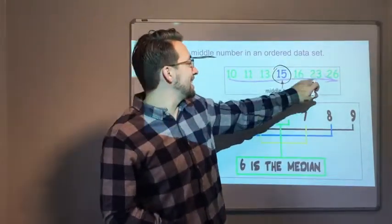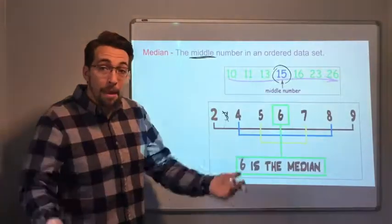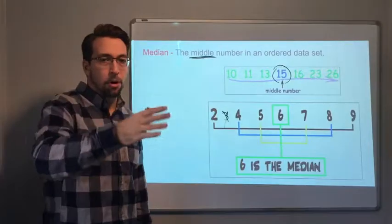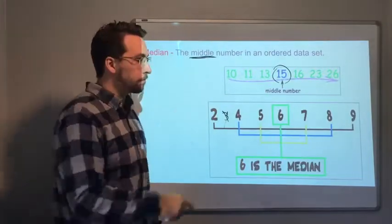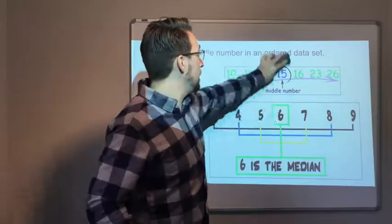10, 11, 13, 15, 16, 23, 26. Fifteen is the middle number. It's the median. So think medium is in between small and large. Small, medium, large. Median is middle.